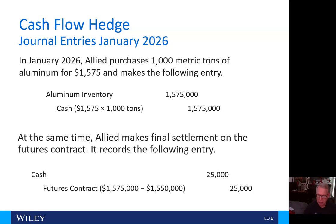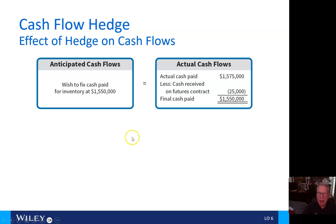When we left off, we were looking at cash flow hedging. Here was that final settlement futures contract, where we debited cash for $25,000 and credited the futures contract for $25,000, representing the difference between $1,575,000 and $1,550,000. So the effect of the hedge on cash flows — we wish to fix the cash paid for inventory at $1,550,000. Our actual cash flows were $1,575,000, and the cash we received on the futures contract was $25,000, representing the final cash paid of $1,550,000.